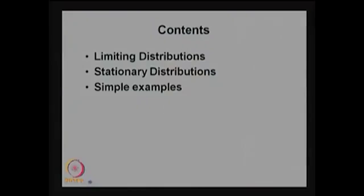I am planning to explain a few examples for the classification of states, then give the definition of limiting distributions, followed by stationary distributions, and then explain how to get the stationary distribution for the same examples if it exists.